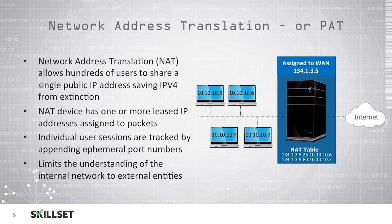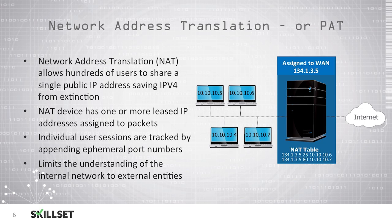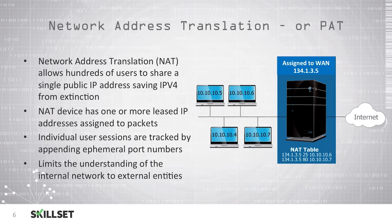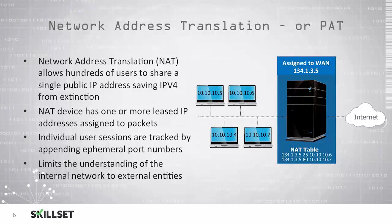Network address translation, or NAT, or port address translation, or PAT, allows many users to share a single public IP address, since IPv4 addresses are scarce — this prevents IPv4 from going extinct. With NAT, our NAT device, typically a router, has one or more IP addresses assigned and uses these to send and receive packets. Individual user sessions on our internal network are tracked by appending ephemeral port numbers — ephemeral meaning temporary, as these port numbers are not used for a significant amount of time. NAT also provides security because individuals outside cannot determine the structure of our internal network, since all traffic enters and exits on one IP address, hiding the number of computers and our internal IP addressing scheme.